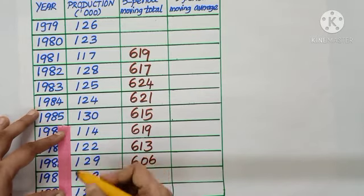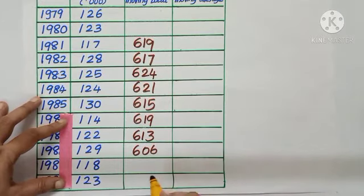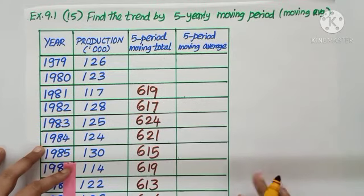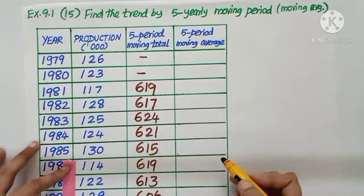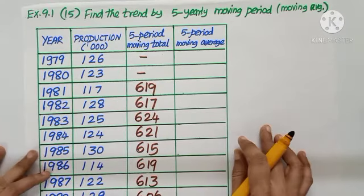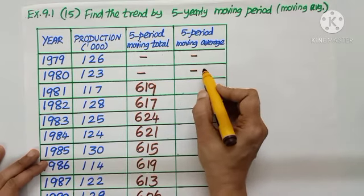Now since I am adding 5, I will not get last 2, also first 2. Now each value, since we added 5, divide by 5 and write the answer. Again, first 2, no values are calculated.